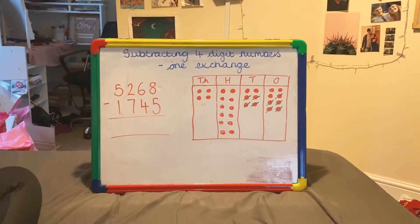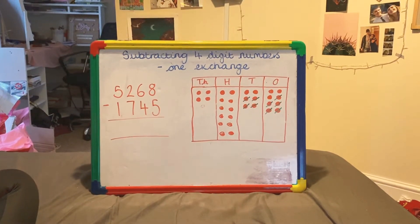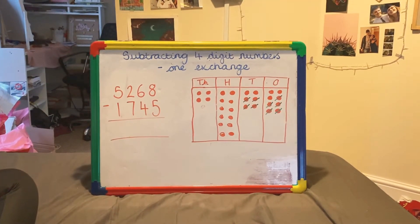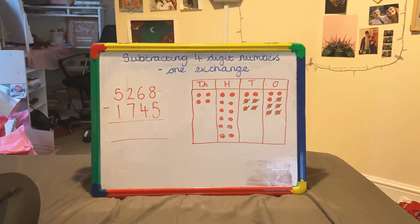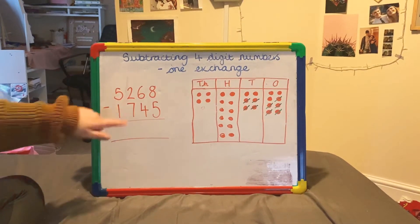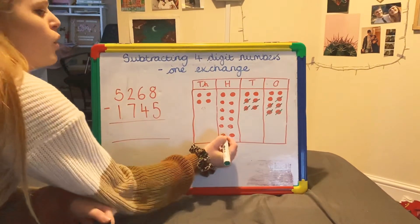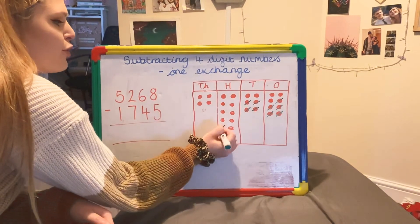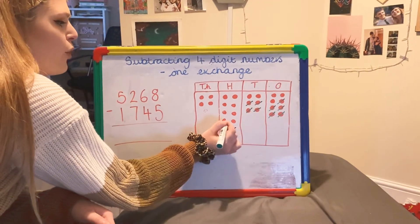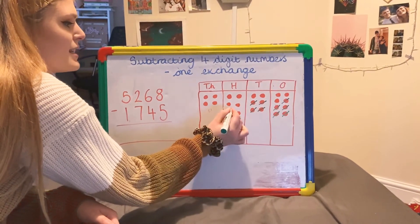Now I've made that exchange, I can continue with my subtraction. So I'm taking away 7 hundreds: 1, 2, 3, 4, 5, 6, 7.